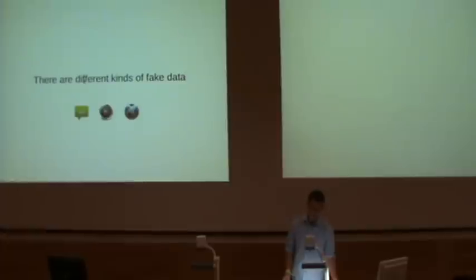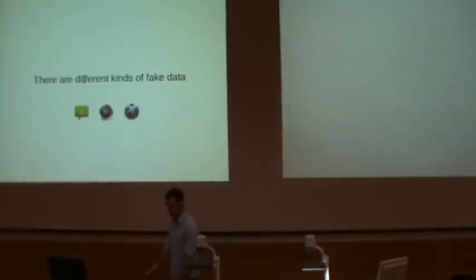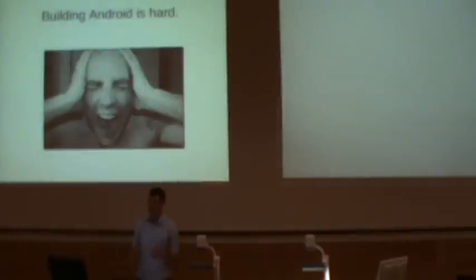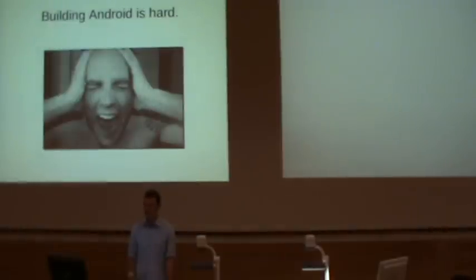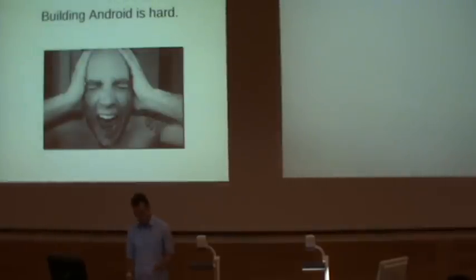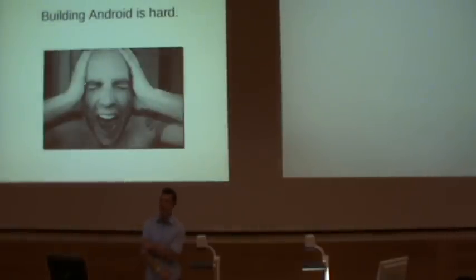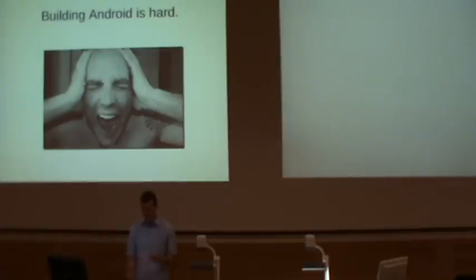Now I'm going to talk a little bit about the technical aspects of how it was built. Basically, the first thing is: forking Android is really hard. The first two weeks of my project I spent just trying to get the thing to compile. There's not really very much documentation on how to do it, and the stuff that exists is scattered around. So one of the things I'm planning to do is write up how to do it, because this is only one thing you could do with a customised Android — there are many other things you could do.